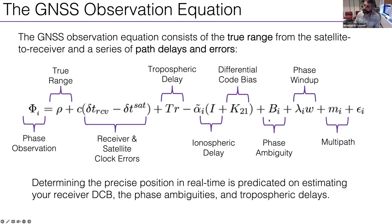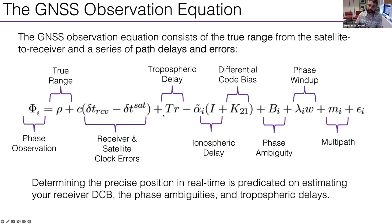I'll show a few equations to explain the benefits. The GNSS phase observation is the superposition of many model terms: the true range from satellite to receiver is what you want, but you also have receiver and satellite clock errors — satellite clocks are nanosecond-level, receiver clocks can be microsecond-level. There are also tropospheric delays from the dry and wet atmosphere, and ionospheric delays which are frequency-dependent and dispersive.